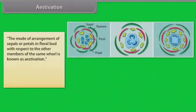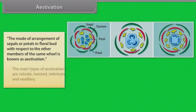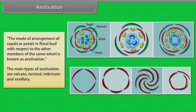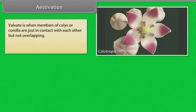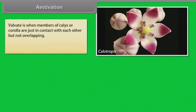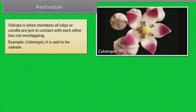Estivation: The mode of arrangement of sepals or petals in a floral bud with respect to the other members of the same whorl is known as estivation. The main types of estivation are valvate, twisted, imbricate, and vexillary. Valvate is when members of calyx or corolla are just in contact with each other but not overlapping. Example: Calotropis.